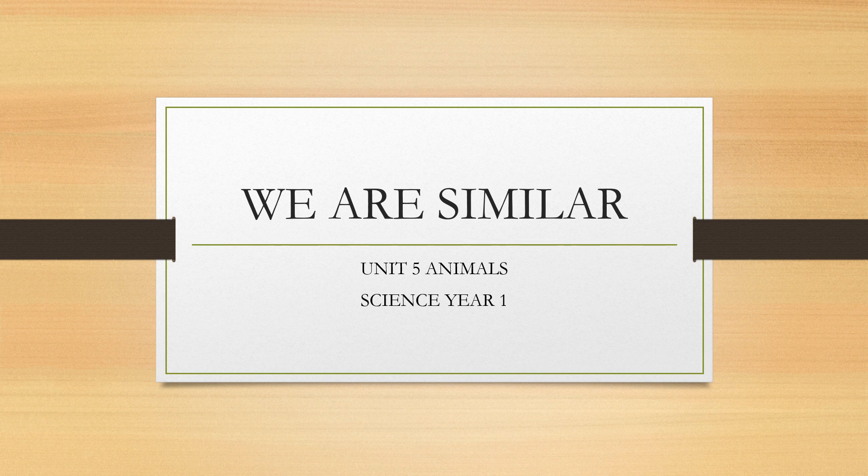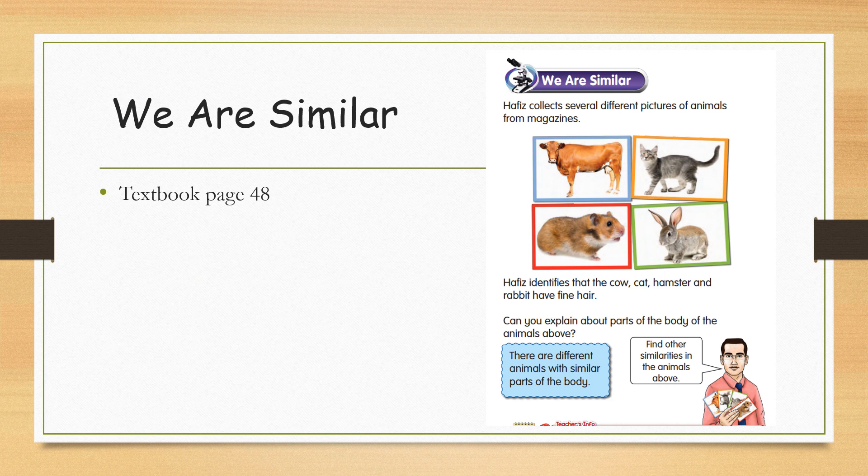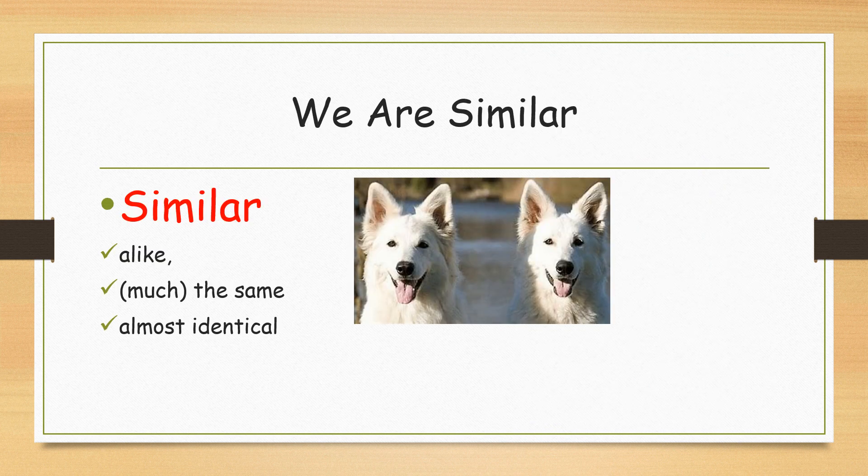Science Year 1, Unit 5: Animals - We are similar. Refer to your textbook page 48. We are similar. Similar means alike, much the same, almost identical.